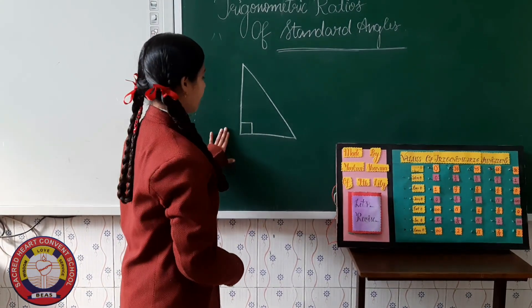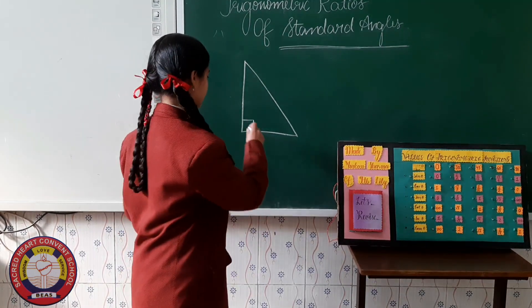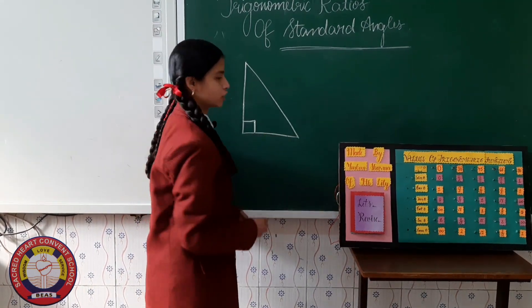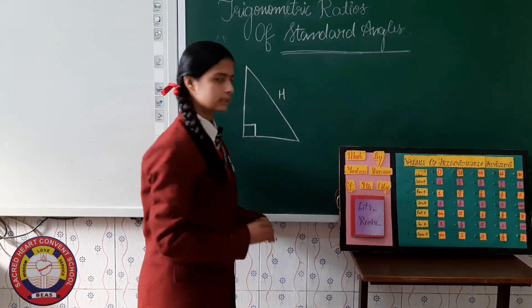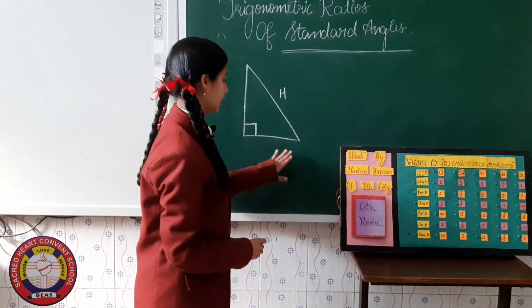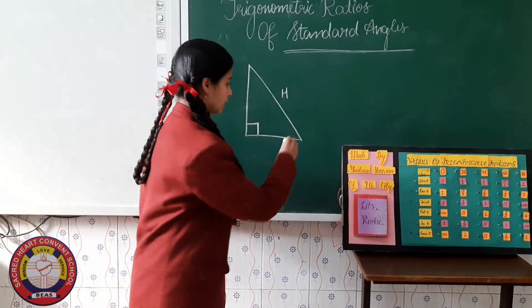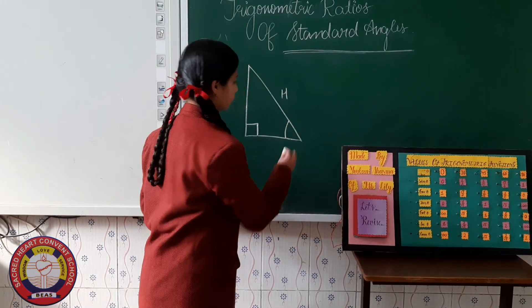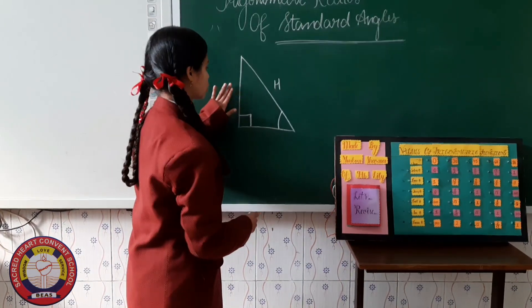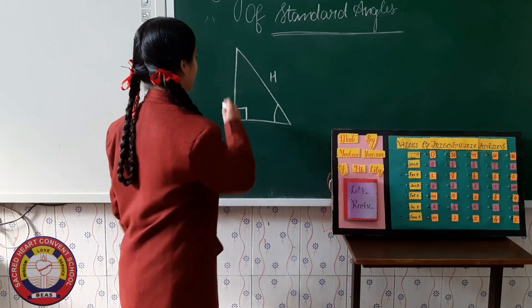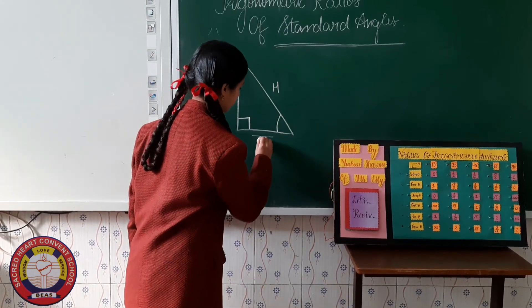If we have to find the hypotenuse, the right angle is here, and the side which is opposite to this right angle is known as the hypotenuse. If we want to find the base and perpendicular, we need an angle. With the help of this angle, we can find the base and perpendicular. The side opposite to this angle is known as the perpendicular, and the leftover side is known as the base.